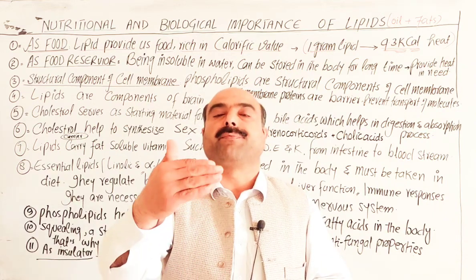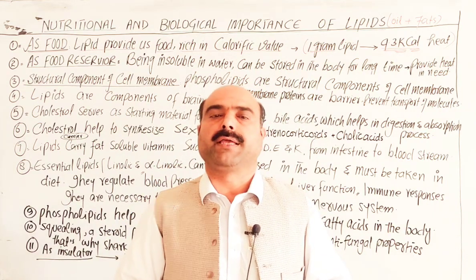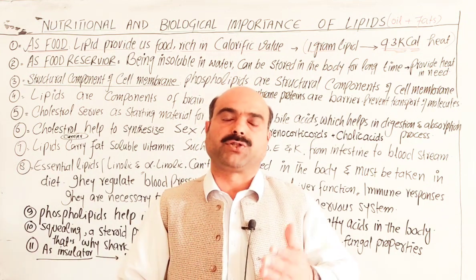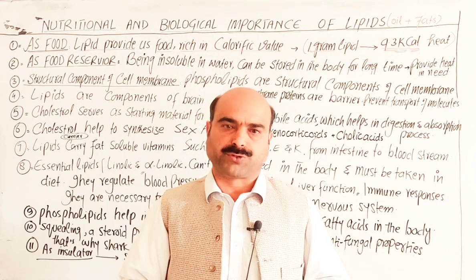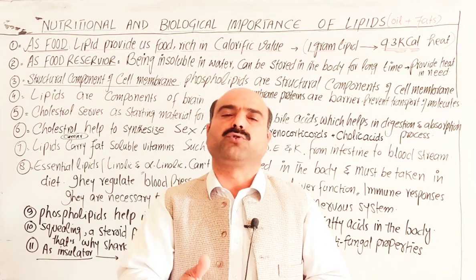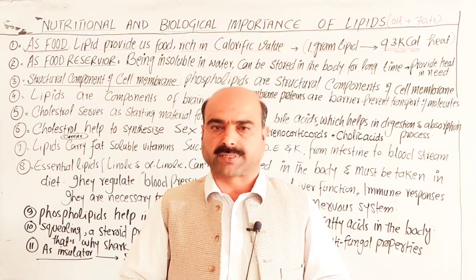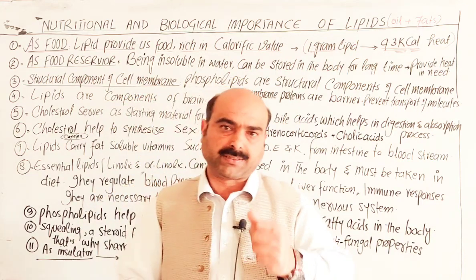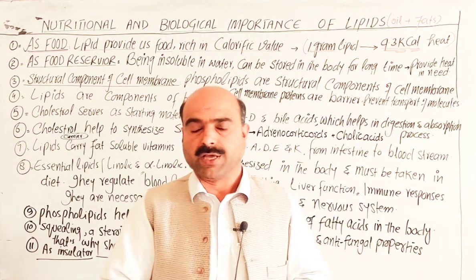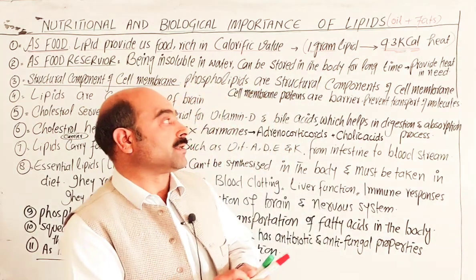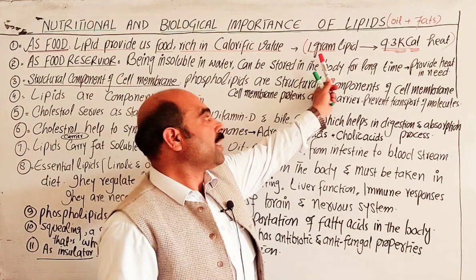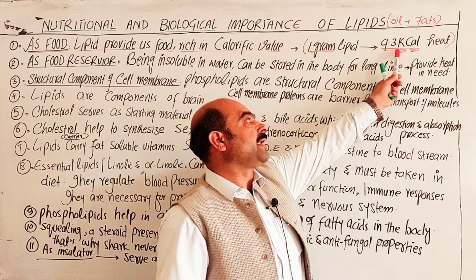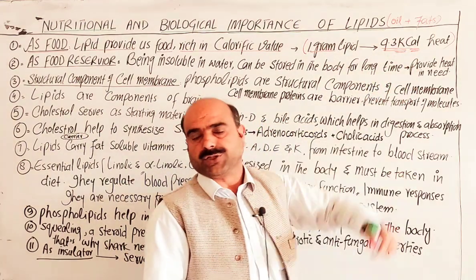Once the stored glucose and carbohydrates are exhausted, the body then turns to fats stored in the body. These fats are stored in a special tissue called adipose tissue. That adipose tissue begins to break down into small units, which are then oxidized in the presence of oxygen to provide energy.